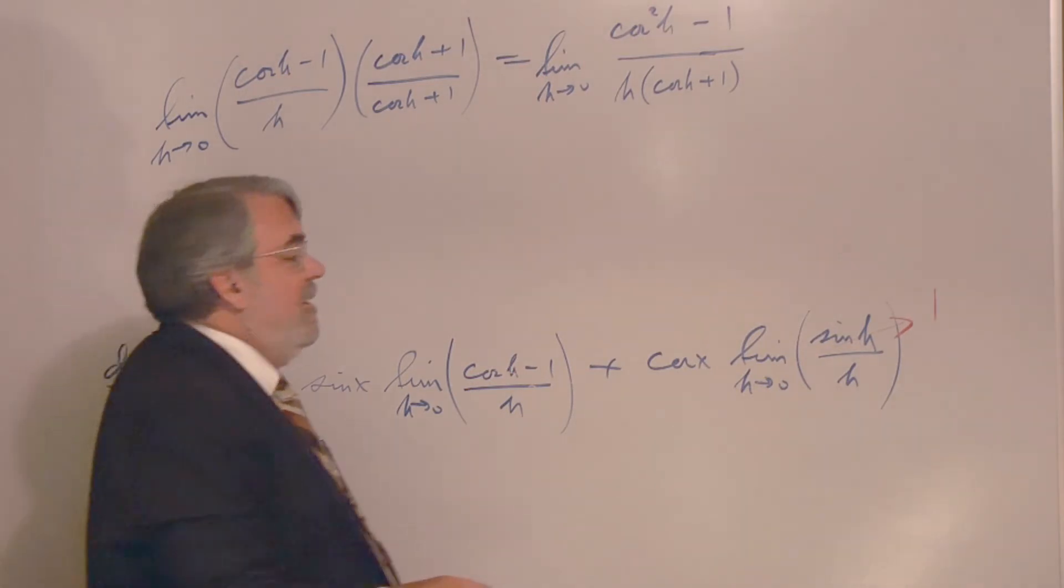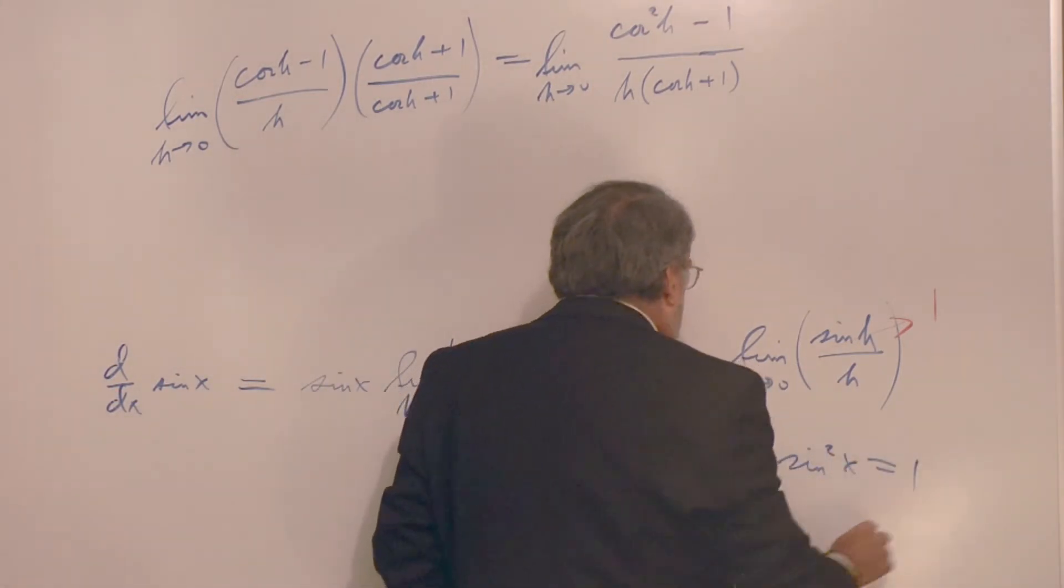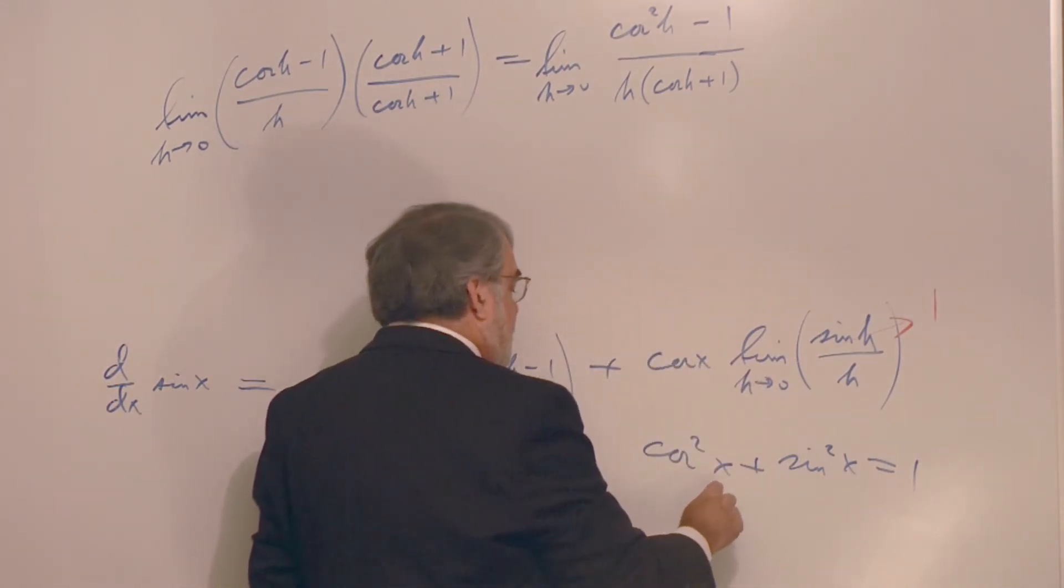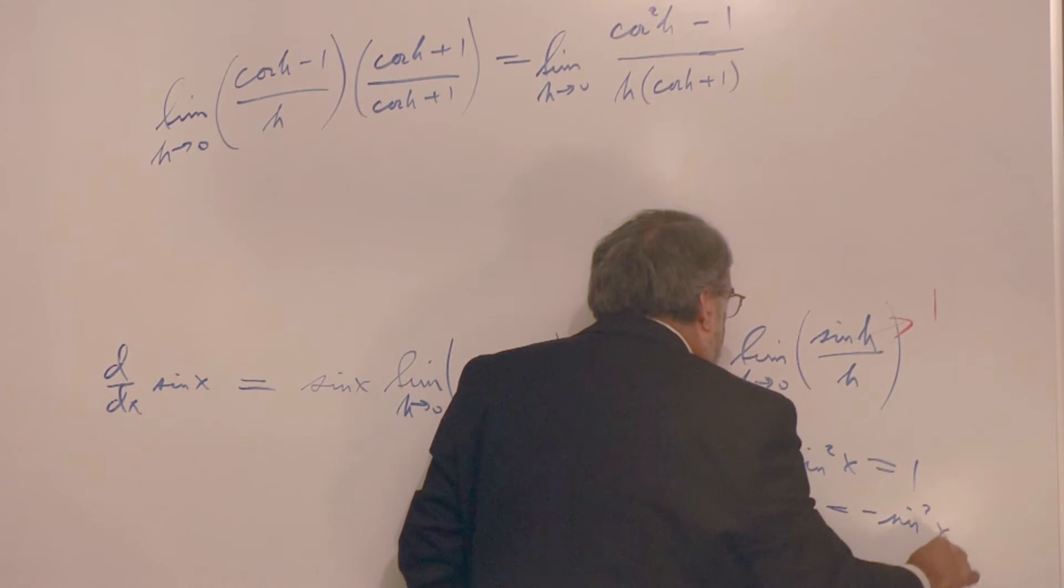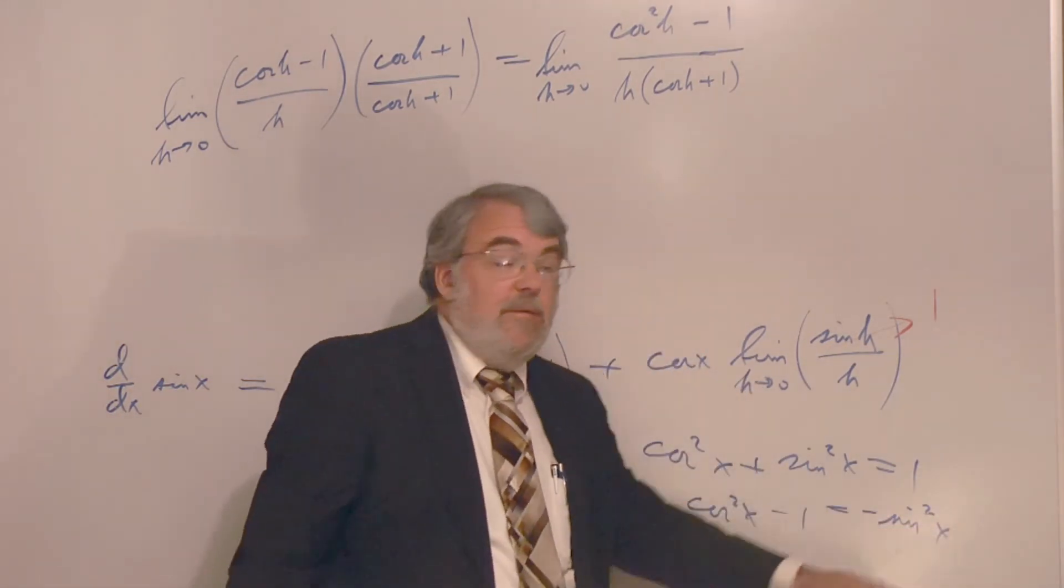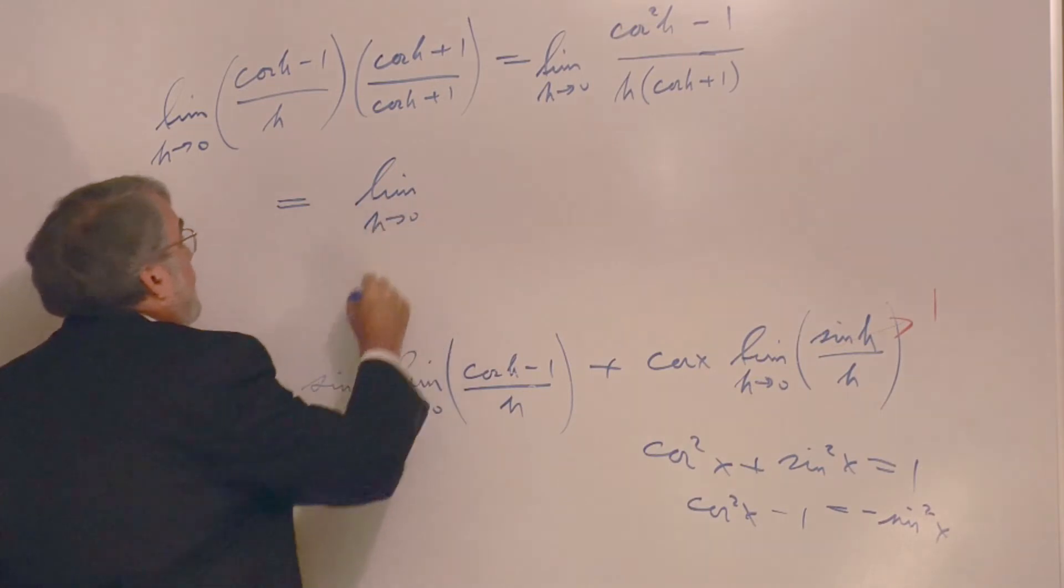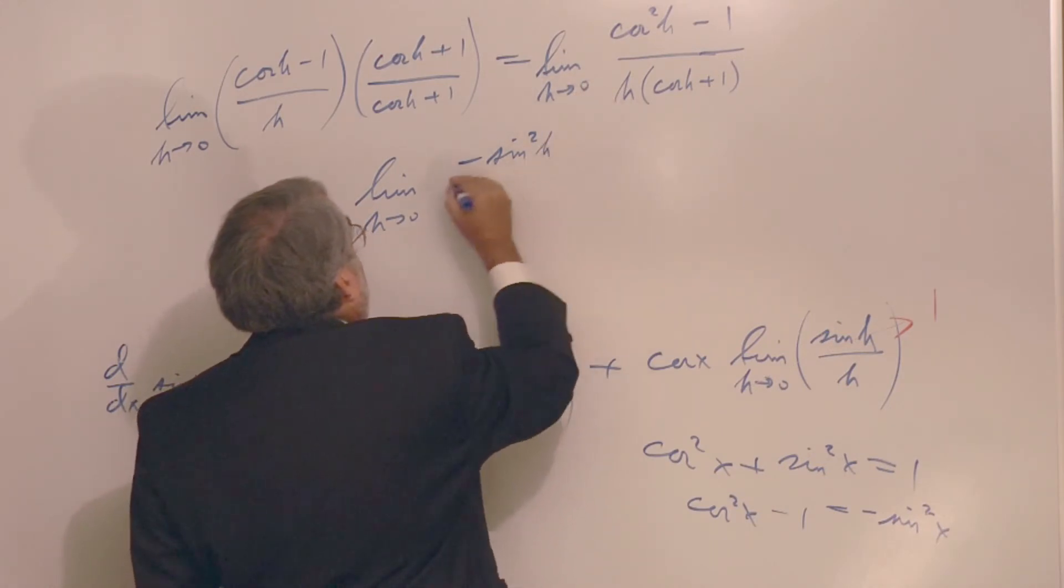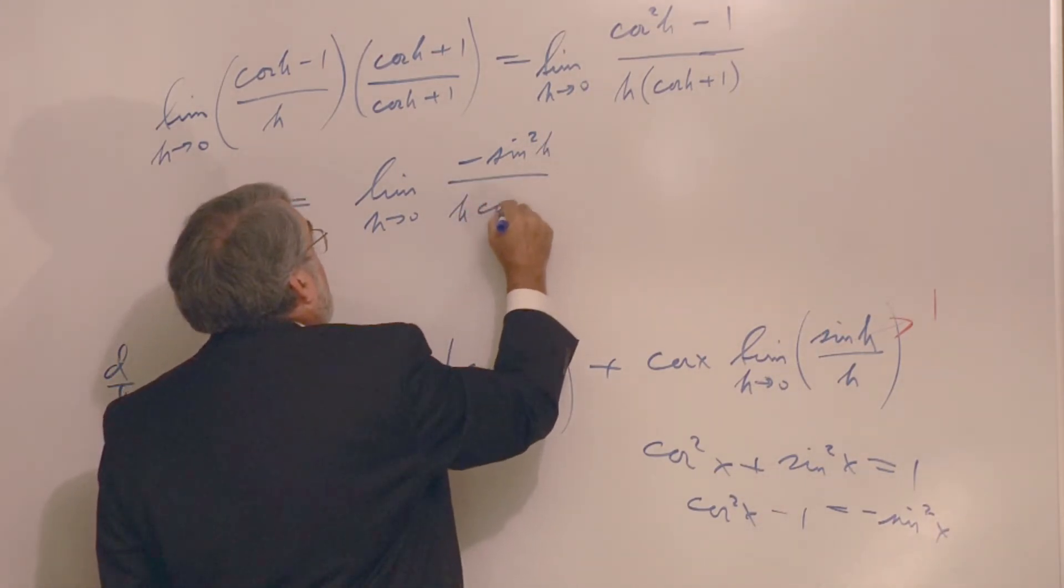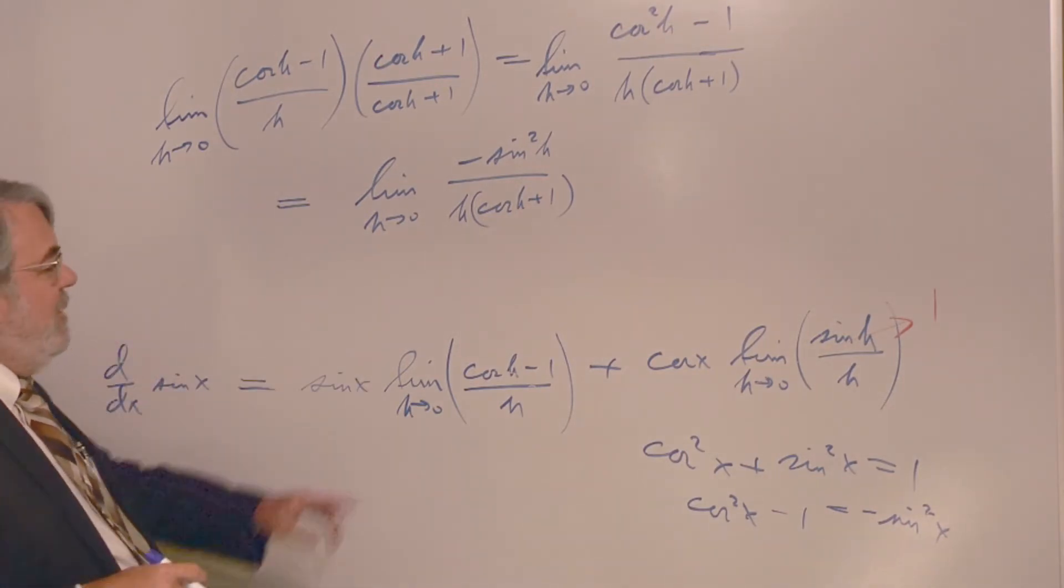It looks like it just got worse, didn't it? Well, not really because we have a nice identity. Remember that the cosine squared x plus sine squared x equals one, which means that cosine squared x, if I subtract one, cosine squared minus one is equal to negative sine squared. So, I can rewrite this as limit h goes to zero of negative sine squared h over h cosine h plus one.